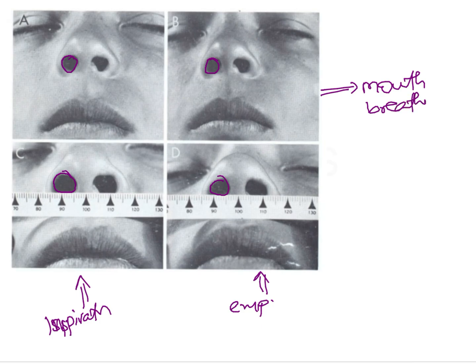The absence of change in size and shape of the external nares during inspiration or expiration shows that this patient is a mouth breather. Whereas in a patient who breathes through the nose, during inspiration there will be an increase in the size of the external nares so that an increased amount of air can pass through. So this is the visual method.